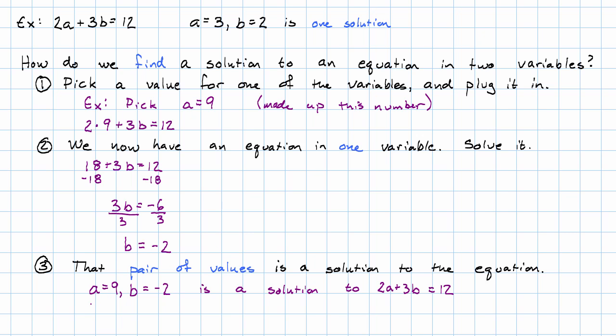And that really is true, right? 2 times 9 plus 3 times negative 2. That's 18 plus negative 6, which really is 12.